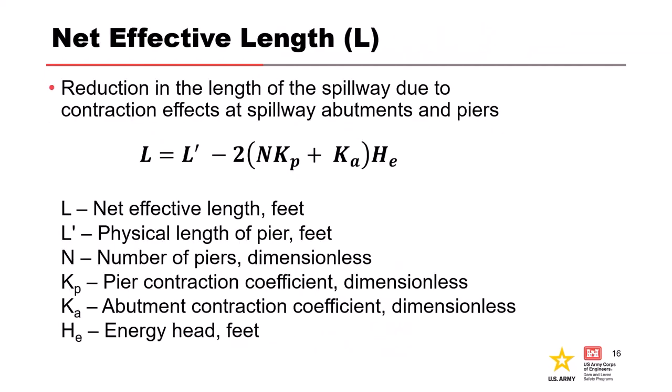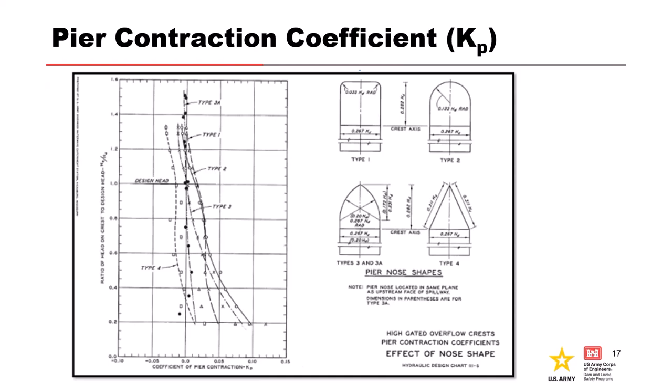When calculating the discharge capacity of your spillway, if you have piers — say six or 17 gate bays each separated by a pier — you need to account for the space taken up by those piers, as well as the energy losses from those obstructions. The net effective length calculation helps figure out what actual length to use in your spillway flow estimate. The abutment and pier contraction coefficients can be found in Engineer Manual 1110-2-1603 hydraulic design charts. You take these coefficients and plug them back into the effective length calculation.